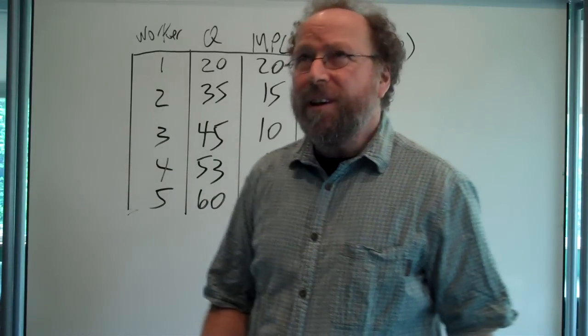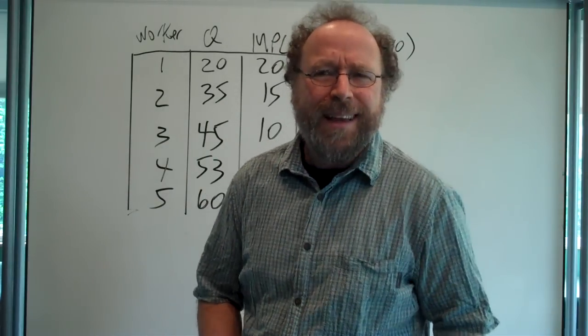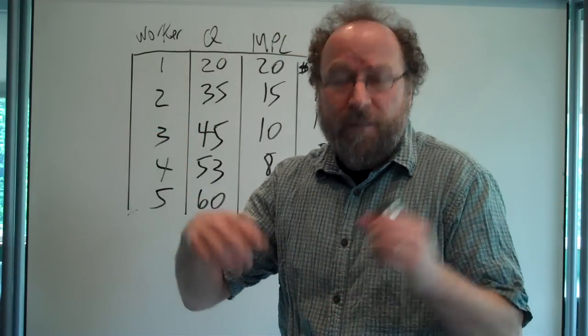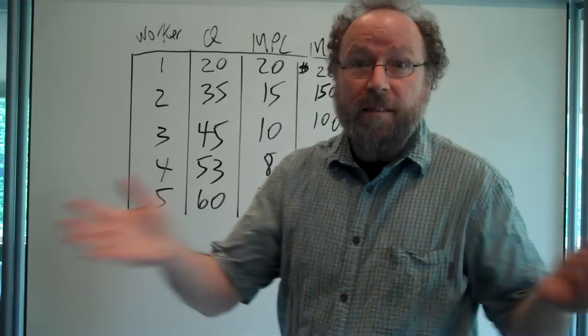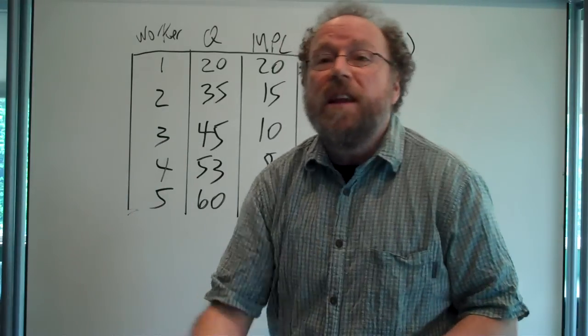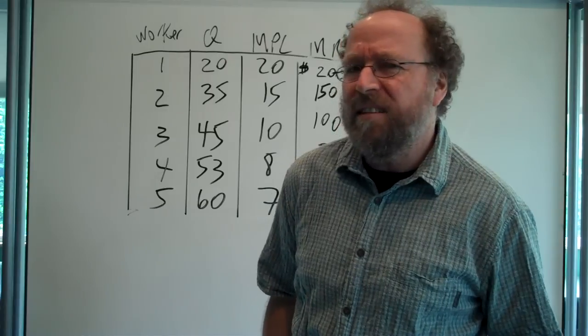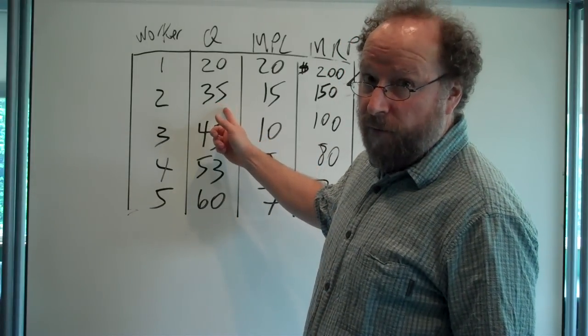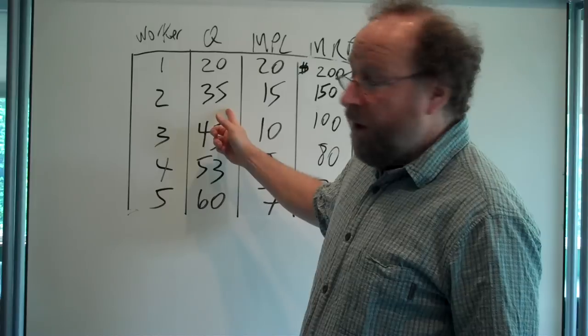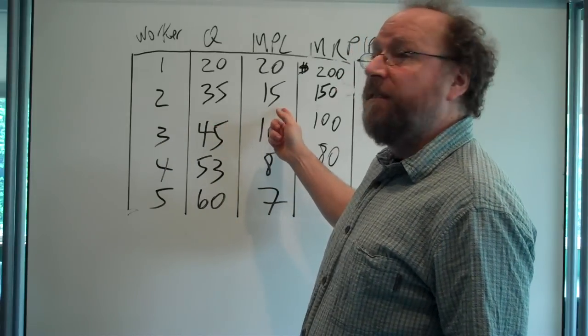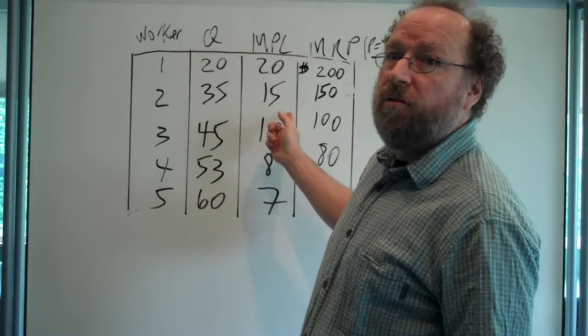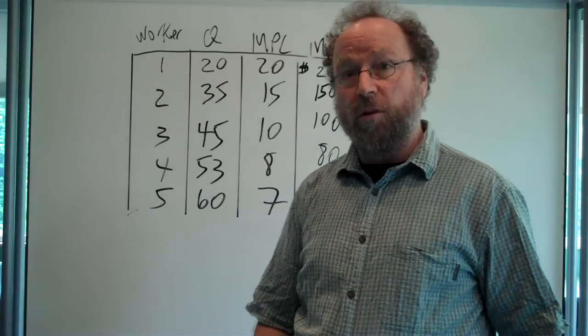The second worker comes in, and it's not as easy. They have to maybe lift up some leaves. Have you ever gone strawberry picking? This is what happens. You go underneath and get the strawberry plants that aren't as easily accessible. Total output goes up to 35 quarts. The second worker adds 15 quarts of strawberries to the 20 that the first worker picked.